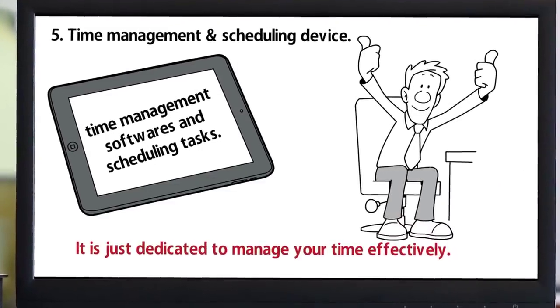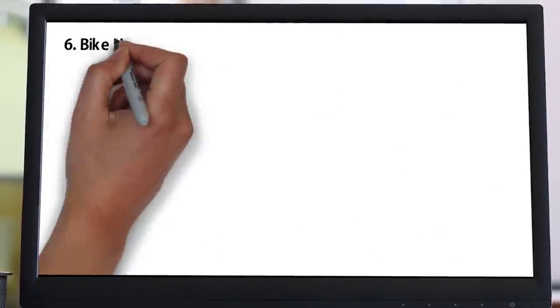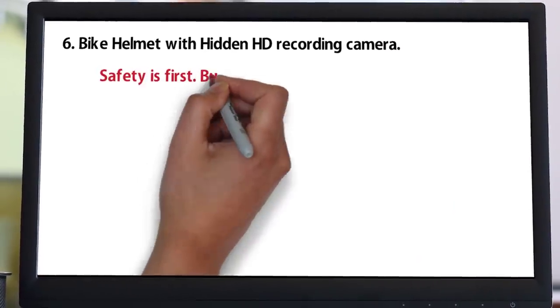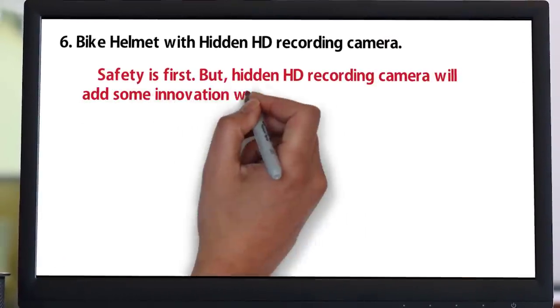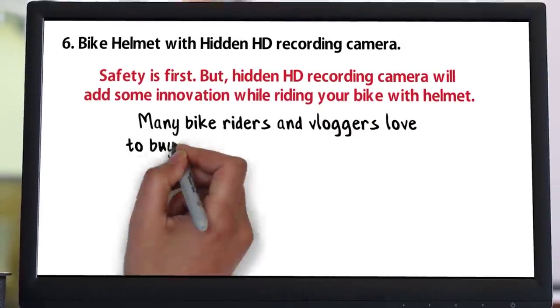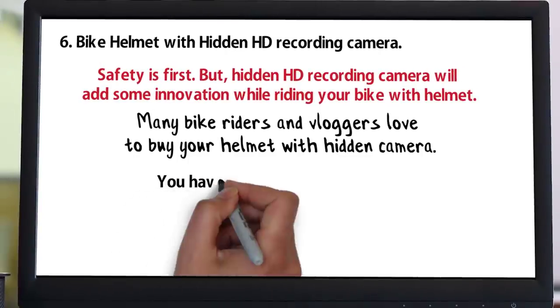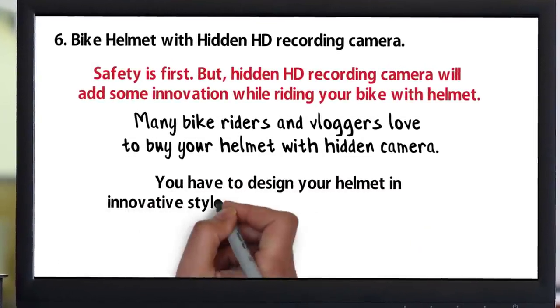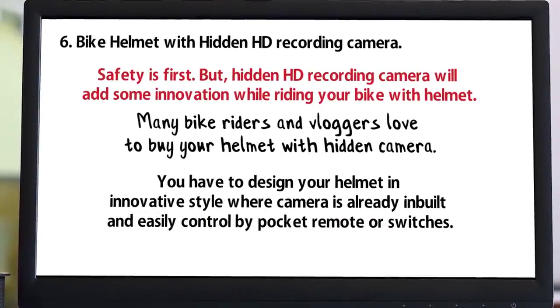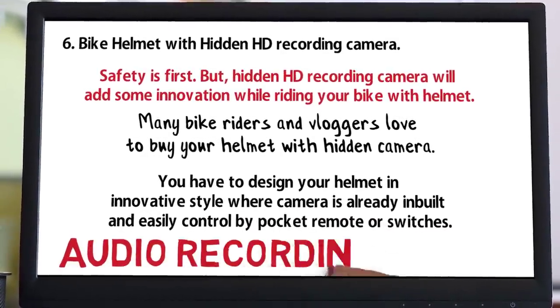Number six: Bike helmet with hidden HD recording camera. Safety is first, but a hidden HD recording camera will add some innovation while riding your bike with helmet. Many bike riders and vloggers would love to buy your helmet with hidden camera. You have to design your helmet in innovative style where camera is already built in and easily controlled by pocket remote or switches. Also add audio recording device into your device.